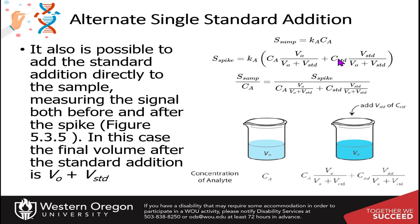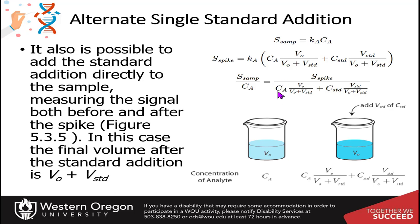Again, because the standard is a very small addition, the Ka values are equivalent in both the sample and the spike. Dividing each equation by the appropriate terms isolates Ka, and setting the two expressions equal allows you to solve for the analyte concentration Ca. All values in the equation are known except for Ca, so you can directly solve for the concentration of the analyte in the sample.